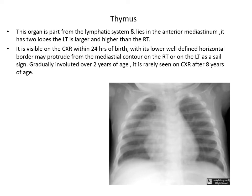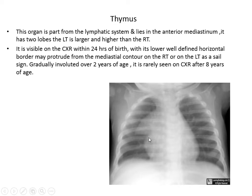The thymus is part of the lymphatic system and lies in the anterior mediastinum. It has two lobes — right and left — with the left being larger and higher. It is visible on chest X-ray within 24 hours of birth, with its lower well-defined horizontal border protruding to either side of the mediastinum, called the sail sign. It gradually involutes after two years of age and is rarely seen on chest X-ray after eight years. It is also visible by ultrasound, CT, and MRI as a soft tissue structure.